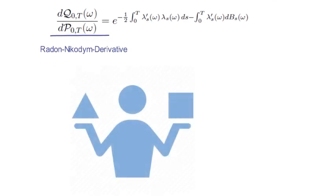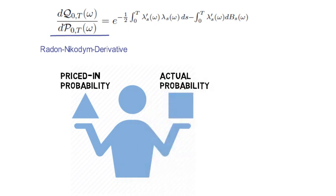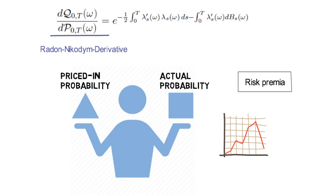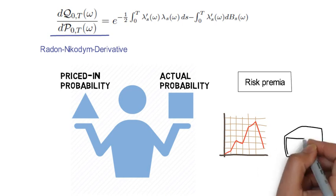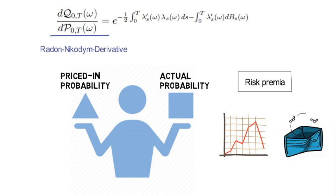You might wonder why a risk-neutral probability should differ from the actual probability in data. Some states of the world are really painful for the representative investor, even if they have a low probability of occurring. These might be states of market crashes, spikes in market volatility, times of liquidity dry-ups, or whatever characterizes states of high marginal utility.